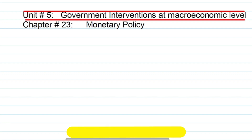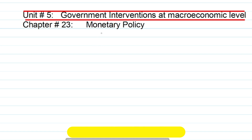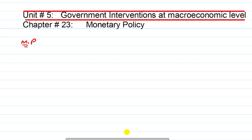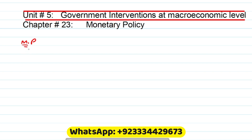Everyone, unit number five: government interventions at macroeconomic level. This is chapter number 23 and monetary policy is the name of the chapter. In this video, first of all we will define what monetary policy is, and then we will look into the graphical representation of the monetary policy, because it is a demand side policy.